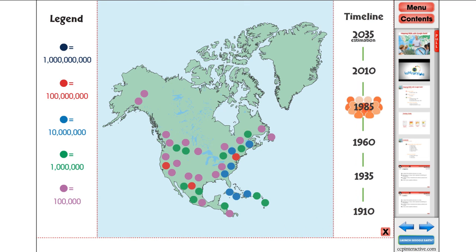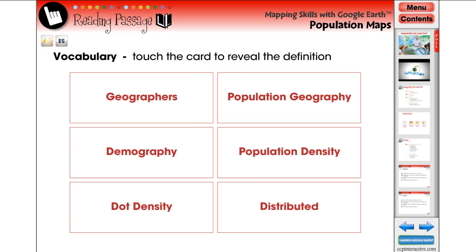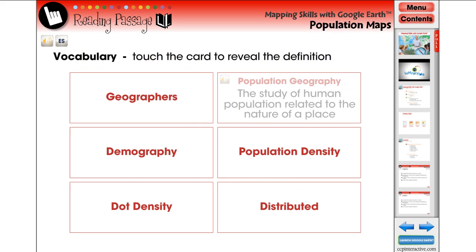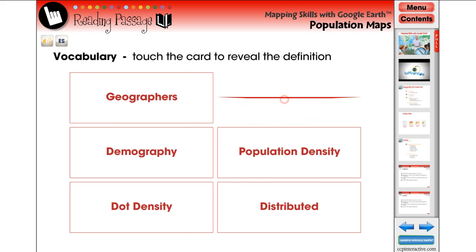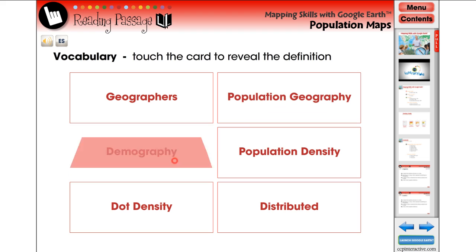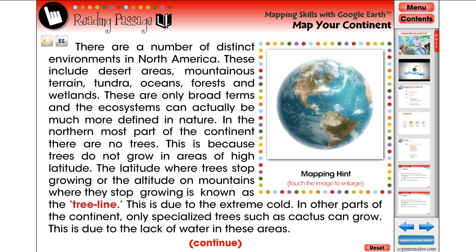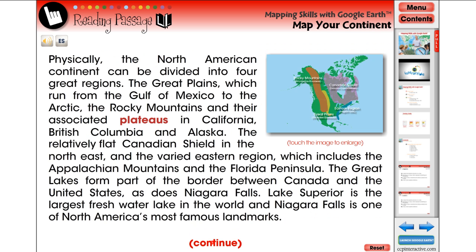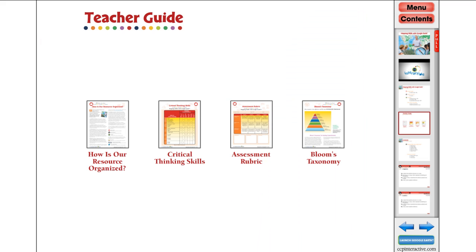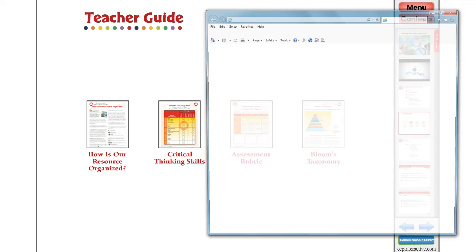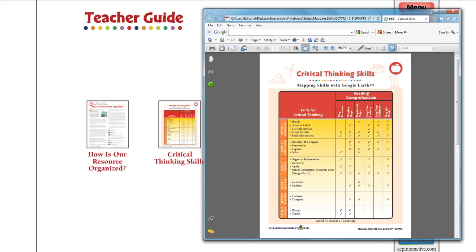We build on the knowledge of previously learned mapping skills, such as elements of maps, how to draw and label maps, and the purposes of maps, to provide students with a greater understanding of more complex maps. All vocabulary is based on the six levels of thinking in Bloom's Taxonomy.